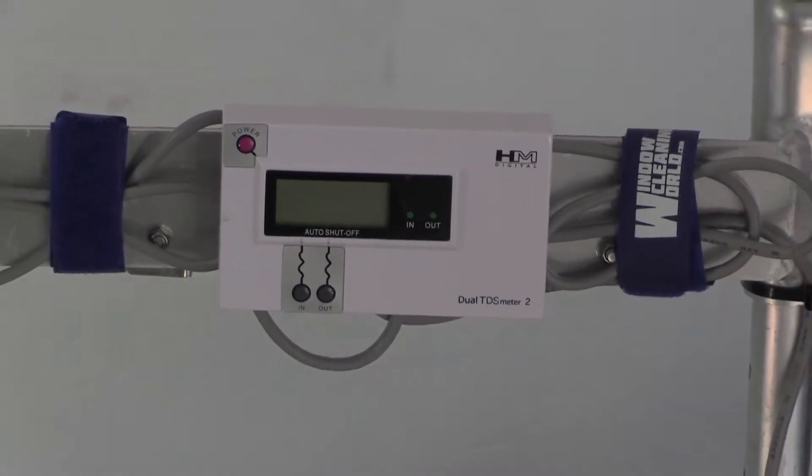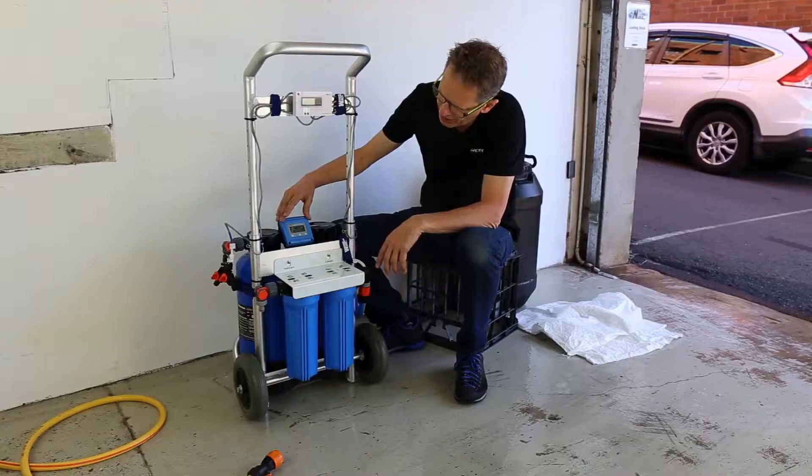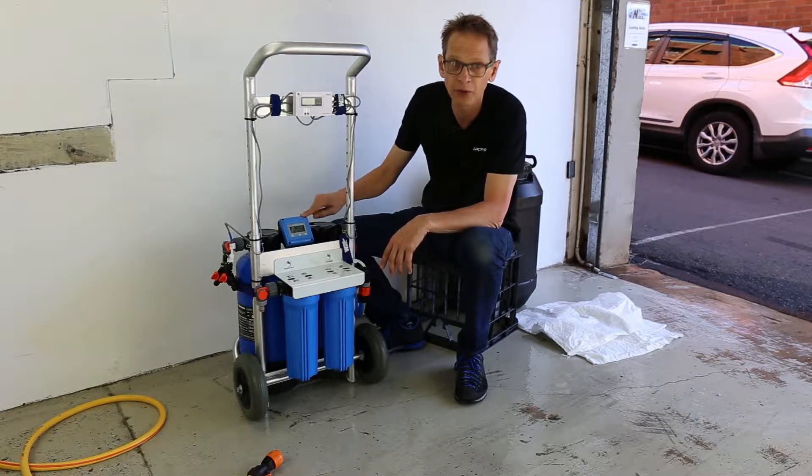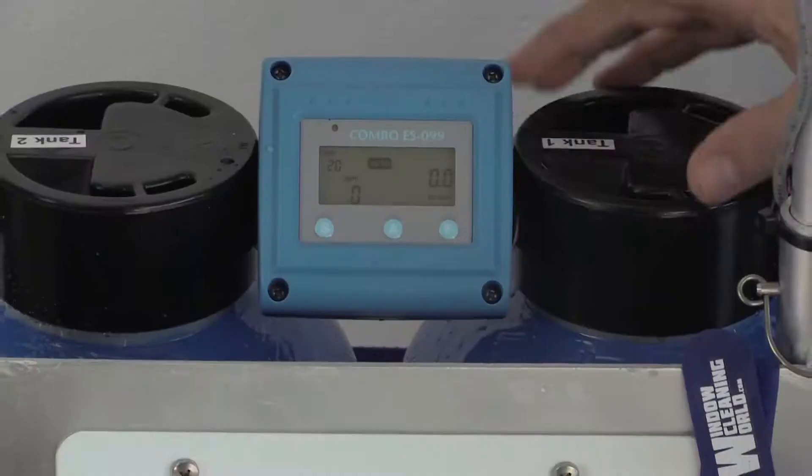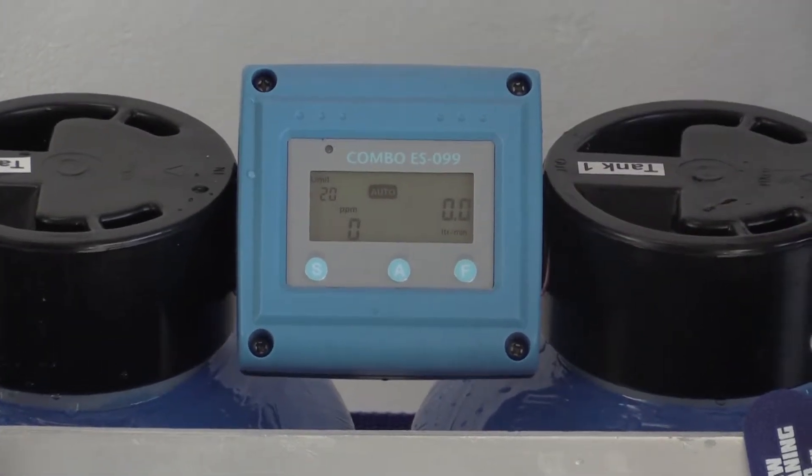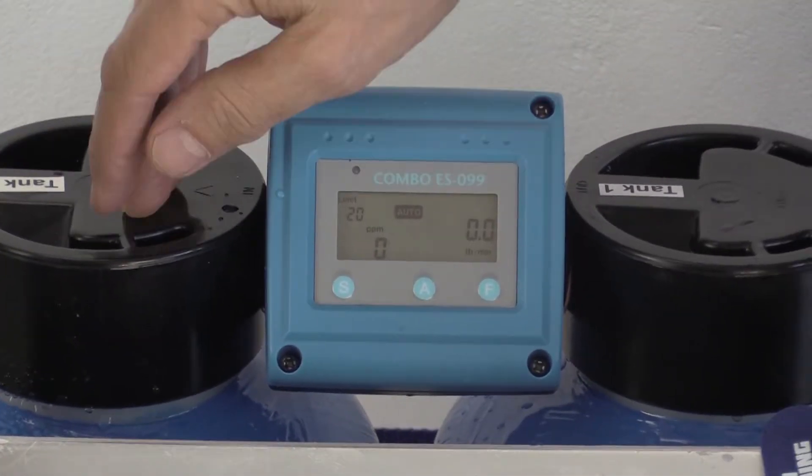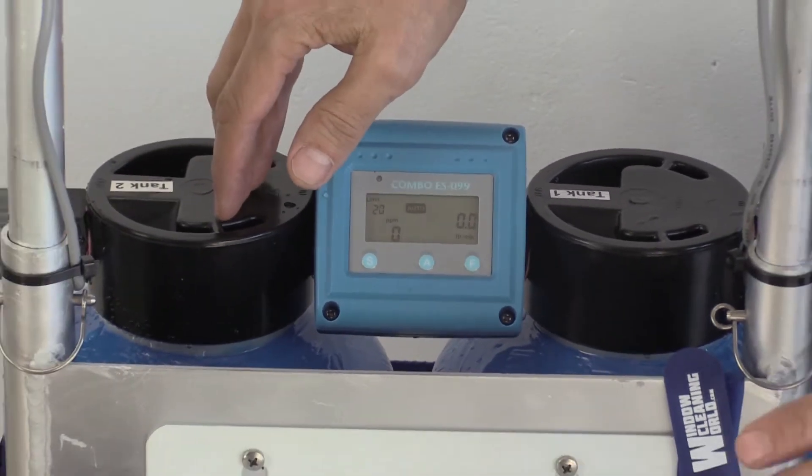Then the flow meter, the combo meter that measures the flow rate, also measures the TDS of the water that comes out of tank 1. Now tank 1 is doing most of the work. In the beginning when the resin is fresh it's pretty much sending pure water into tank 2 and tank 2 is doing virtually nothing.